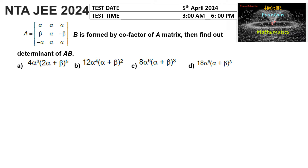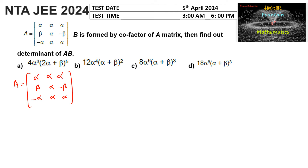Matrix A is a 3×3 matrix given with entries alpha, alpha, alpha; beta, alpha, and minus beta; and negative alpha, alpha, and alpha. Let us find matrix B, where B is formed by the cofactors of matrix A.